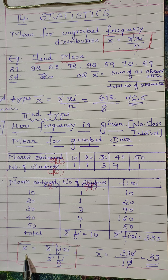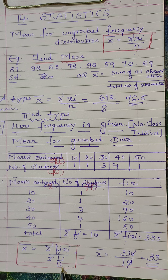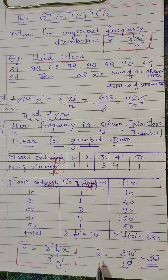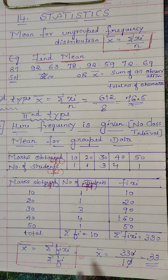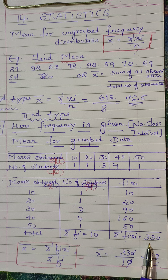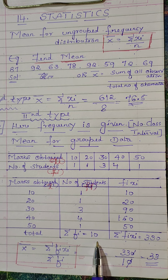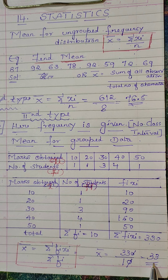Now x̄ = Σfᵢxᵢ / Σfᵢ — this is our formula. So x̄ = Σfᵢxᵢ means 330, and Σfᵢ ka value 10. Then you solve this and you will get x̄ = 33.